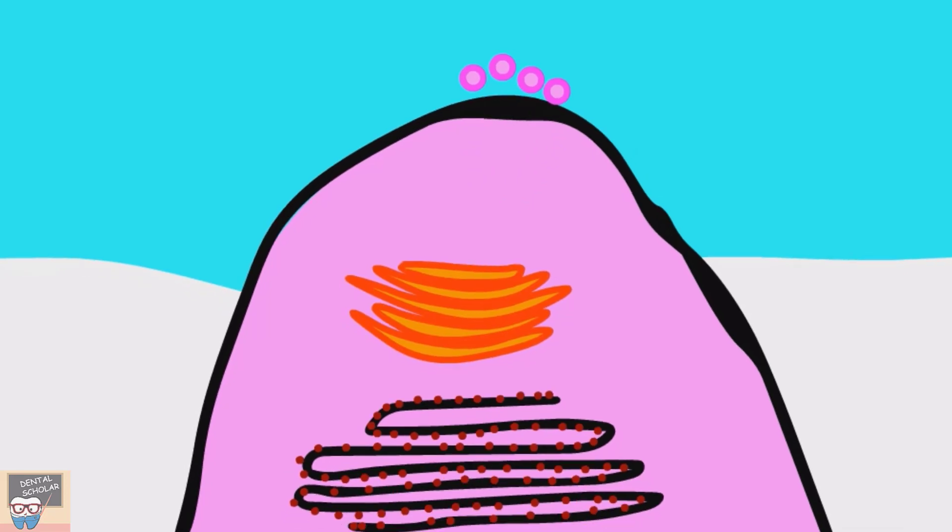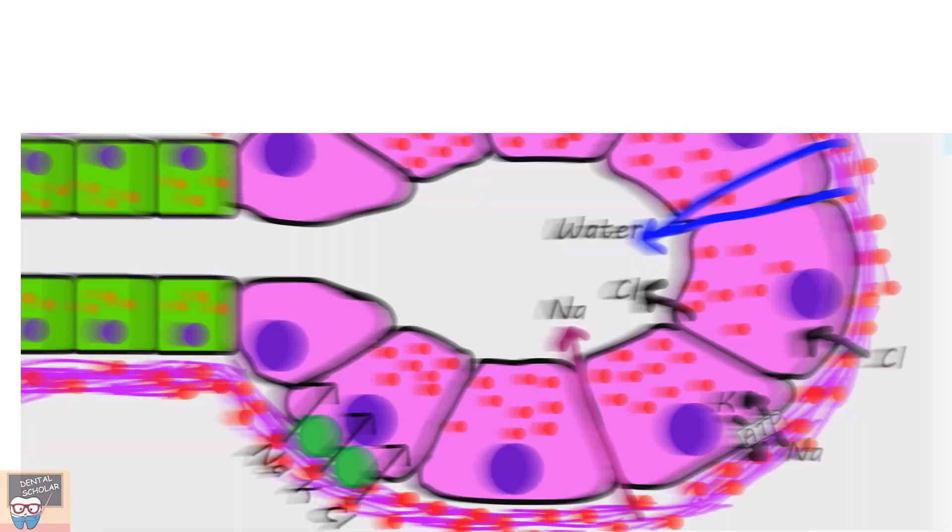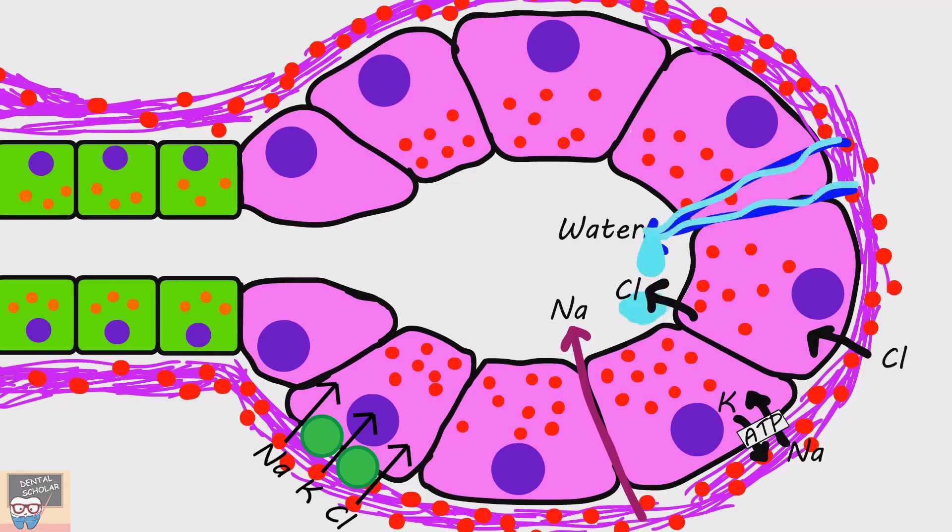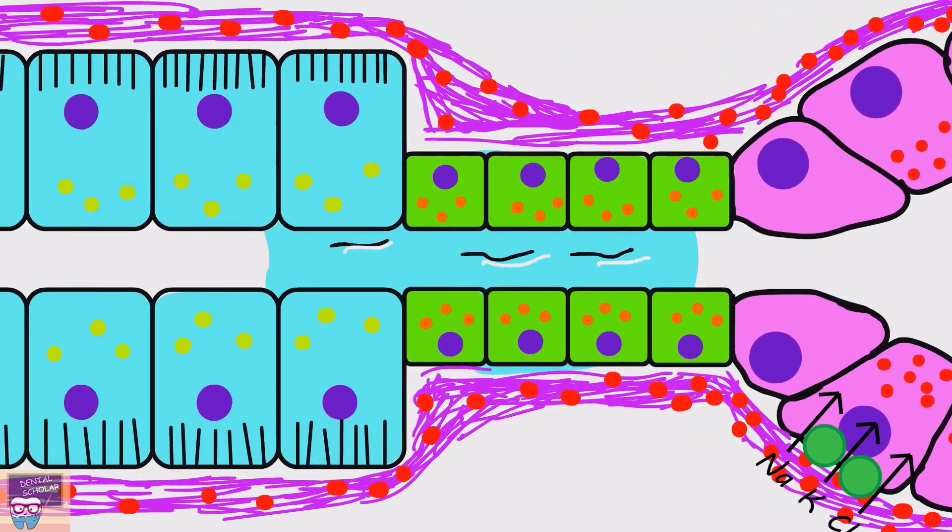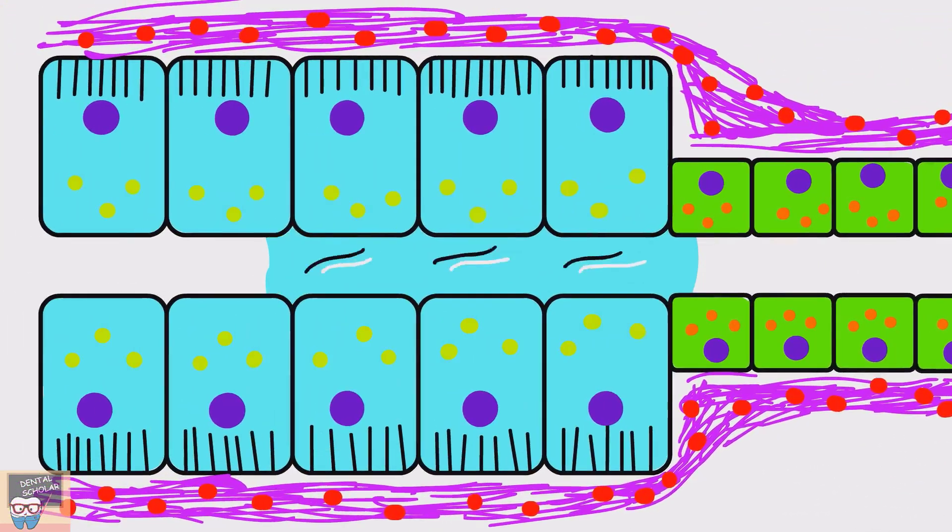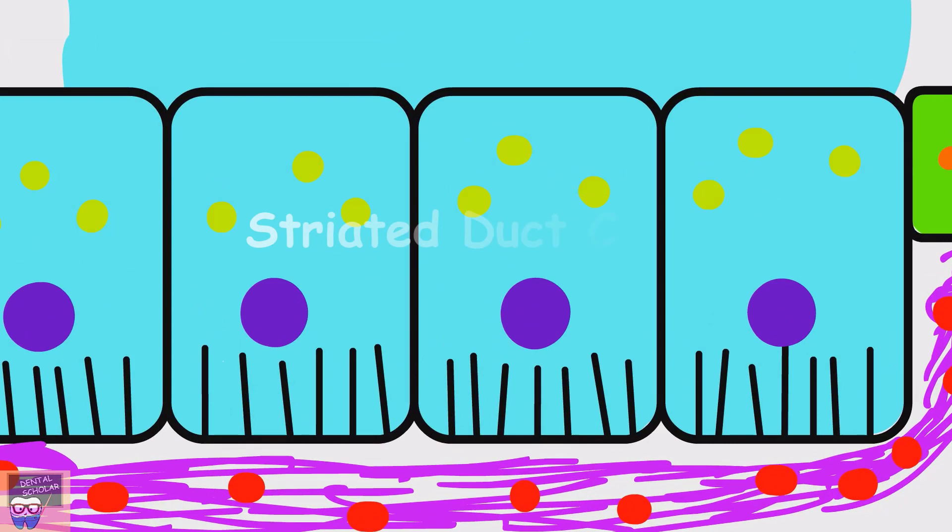So this was the saliva secretion. Now, let's go to the modification of saliva. After secretion, saliva is ejected from secretory unit into the intercalated duct, from where the saliva moves into the striated duct. The striated duct is named so as its cells have striations at the base, which helps in modification of saliva by increasing the surface area of cell for absorption and secretion.